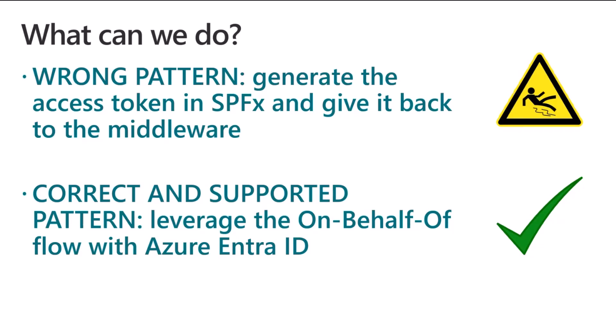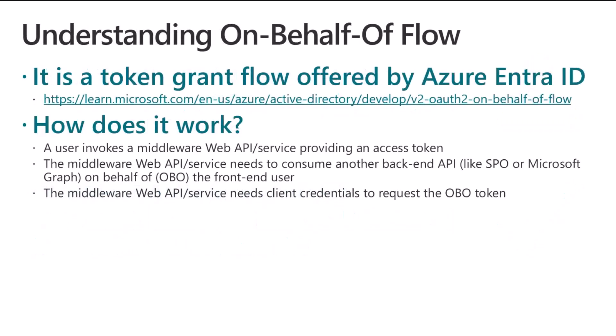The right way of doing what we are talking about is to rely on the On-Behalf-Of (OBO) flow, which is available through Azure Entra ID, also known previously as Azure Active Directory. The OBO flow is a flow that allows your applications to get a token on behalf of a user, so that when you get that specific token, you will be able to consume a back-end API providing a token to the target API which will include information about who the front-end user is. This is a really powerful scenario because it allows you to act on behalf of a user even from a middleware or back-end infrastructure.